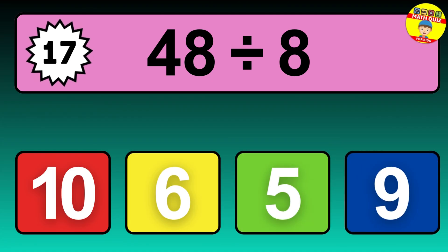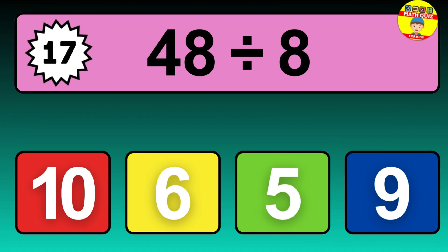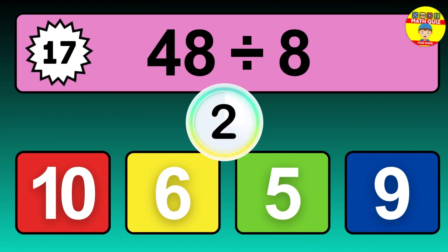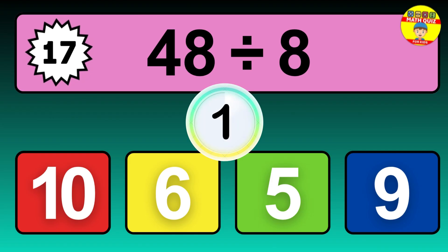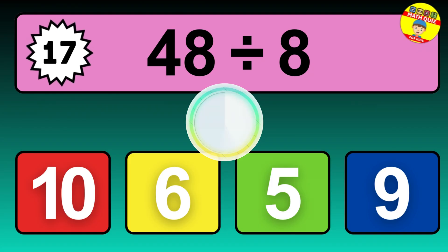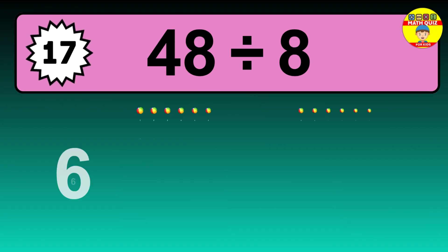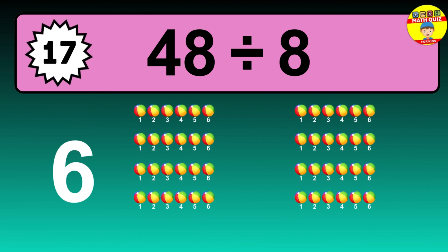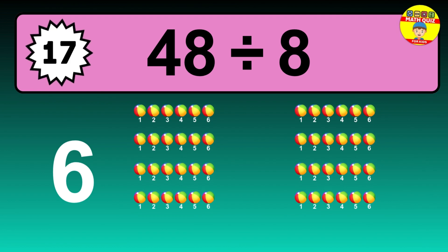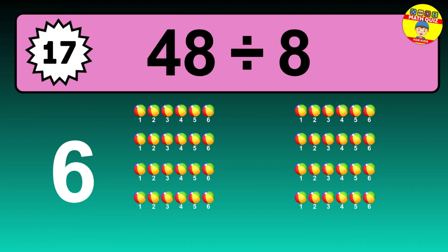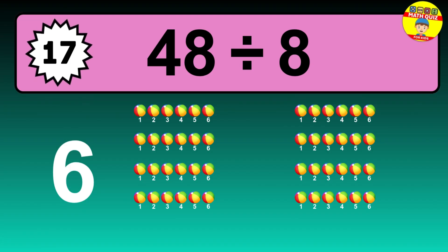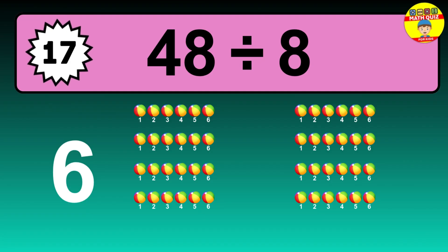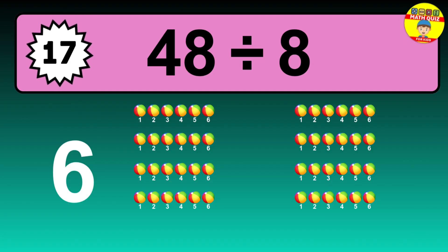48 divided by 8. It's time to think. Let's go to the solution. Divide the number 48 by 8. Each group contains 8 units, so dividing 48 by 8 results in 6 equal groups. Thus, the result is 48 divided by 8 equals 6.